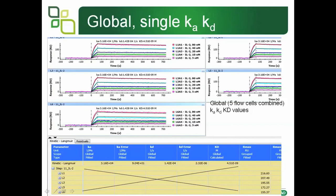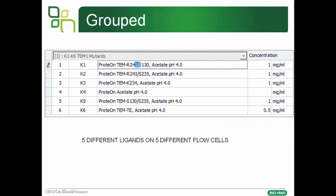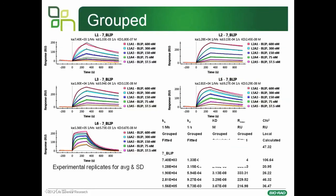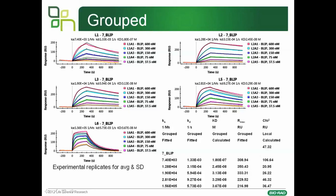You can see here there is no per-channel Ka or Kd — it's a single global fit. A grouped fit is often done when the ligands are different. You can see here that each of the ligands is a different mutant, so a global analysis here would not be possible. You would do a grouped fit, generating a different Ka and Kd for each flow cell, with experimental replicates needed to produce averages and standard deviations.